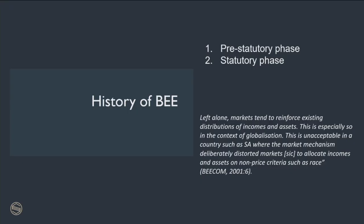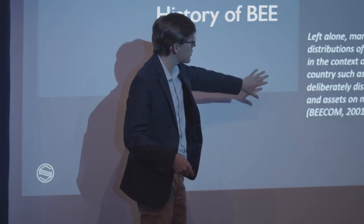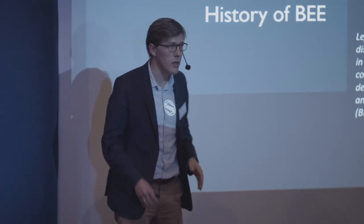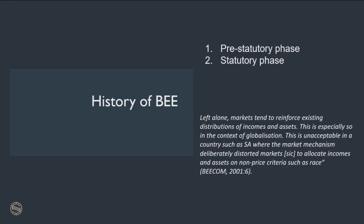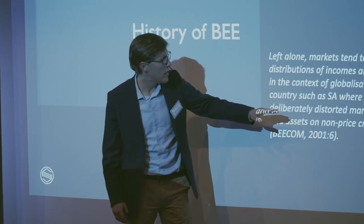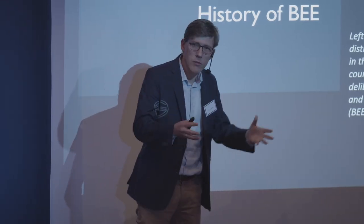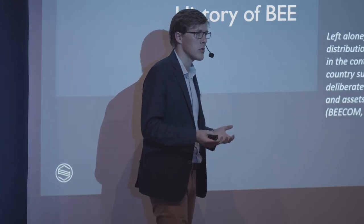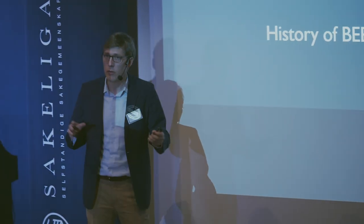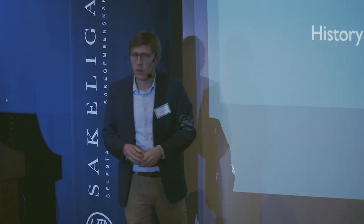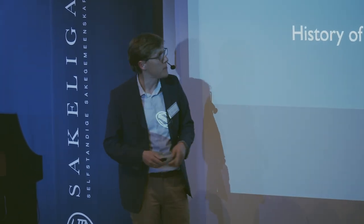That document recommended legislation to redistribute ownership. One of the things it said was: 'Left alone, markets tend to reinforce existing distributions of incomes and assets. This is especially so in the context of globalization, where the market mechanism deliberately distorted markets to allocate incomes and assets on non-price criteria such as race.' This quote gives us an idea of the thinking behind BEE. It's actually a little bit confused — it's not clear whether previous government policy caused the distortions or whether the market did. This misconception is throughout the BEE Commission. We see both hostility towards markets and hostility towards legislation, and the answer to that, of course, is new legislation.